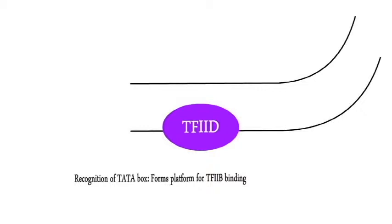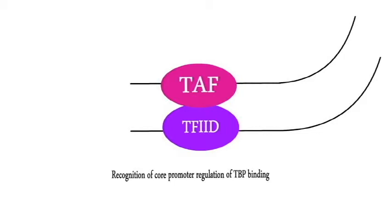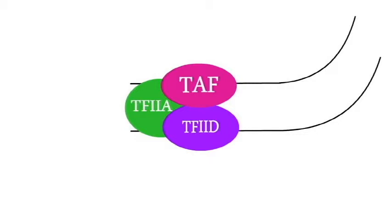TF2D binds to the TATA box of the promoter region. The binding of this factor marks the initiation of the transcription process. TATA binding protein associated factor helps TF2D in recognizing the core promoter. TF2A binds upstream of TF2D and stabilizes the binding of TATA binding protein and TATA binding protein associated factor.